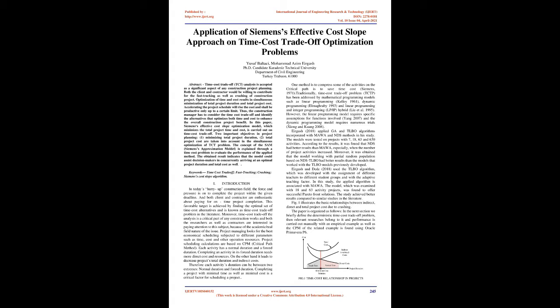One: minimizing total project duration. Two: total project cost — are taken into account in the simultaneous optimization of TCT problem. The concept of the SAM, Siemens' approximation model, is explained through a time-cost problem to evaluate the performance of the applied method. The obtained result indicates that the model could assist decision-makers in concurrently arriving at an optimal project duration and total cost as well.